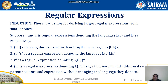Next we will see the four induction rules used to derive larger regular expressions from smaller ones. Suppose r and s are regular expressions denoting languages L(r) and L(s). Then: r|s is a regular expression denoting L(r) ∪ L(s); rs (concatenation) is a regular expression denoting L(r)·L(s), meaning S is from L(r) and T is from L(s) forming ST; r* is a regular expression denoting L(r)*. Adding brackets around r does not change the language defined by the regular expression.